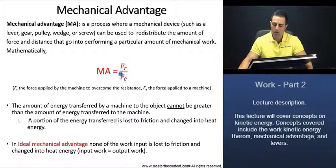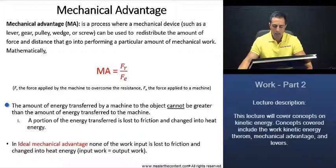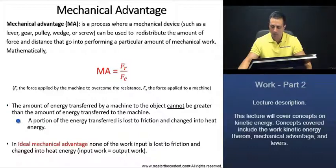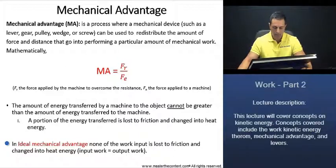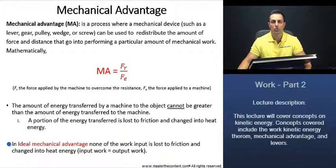Basically, mechanical advantage is where the machine multiplies the effort force. Two more points before we move on: the amount of energy transferred by a machine to the object cannot be greater than the amount of energy transferred to the machine. And a portion of the energy transferred is lost to friction and changed into heat energy. In the problems we'll be working with in this lecture, we'll use ideal mechanical advantage, meaning none of the work input is lost to friction, so input work is equivalent to output work.